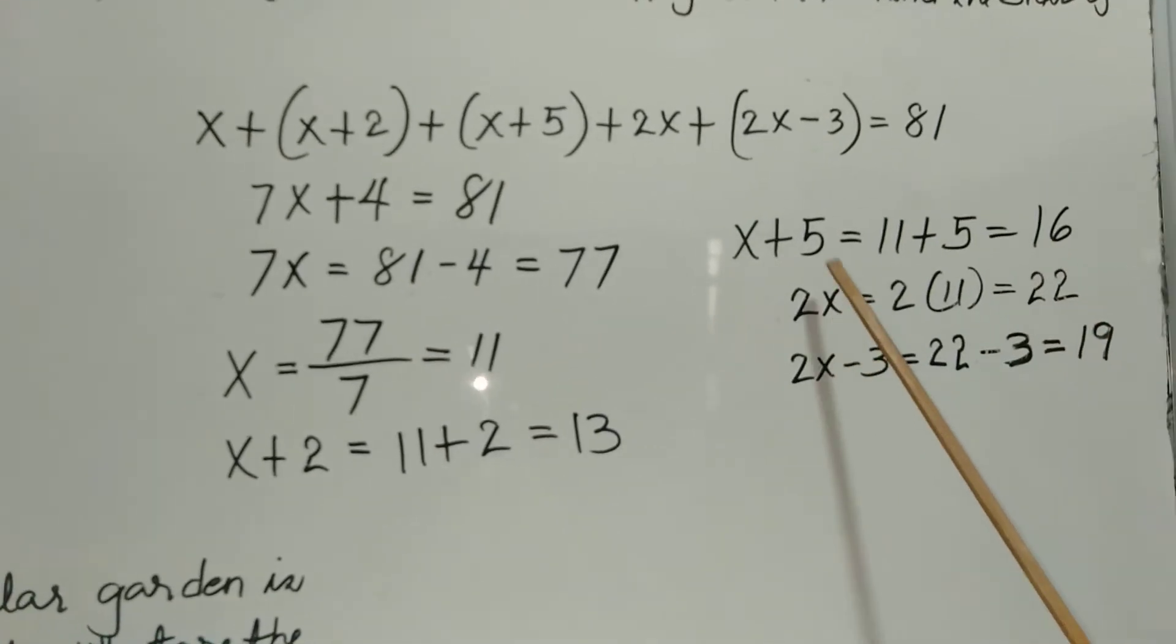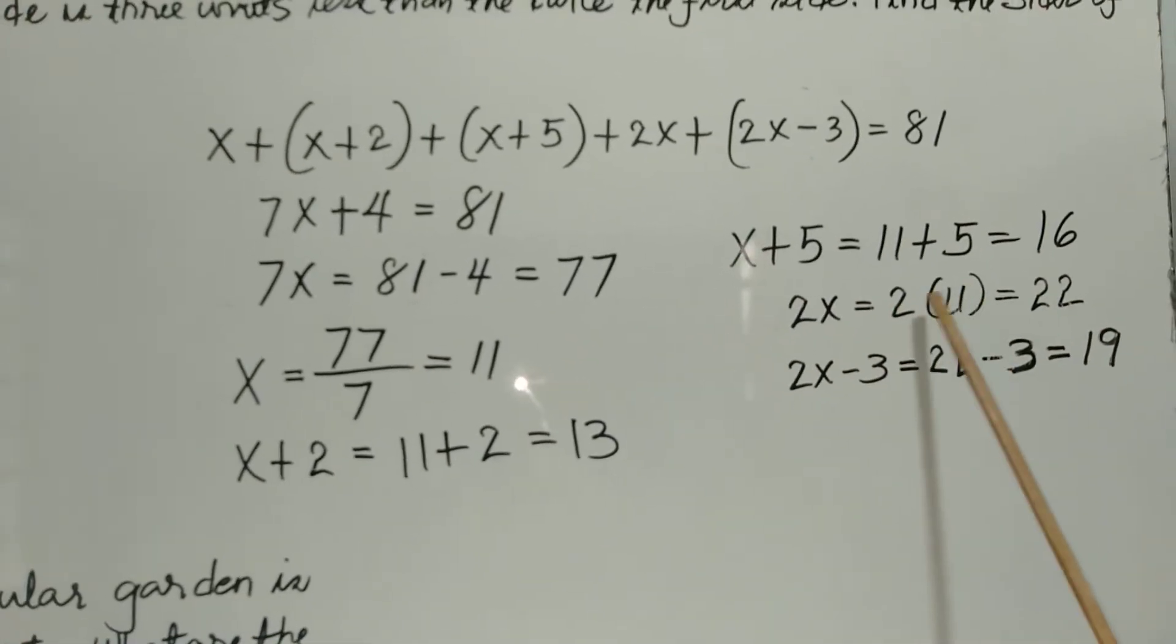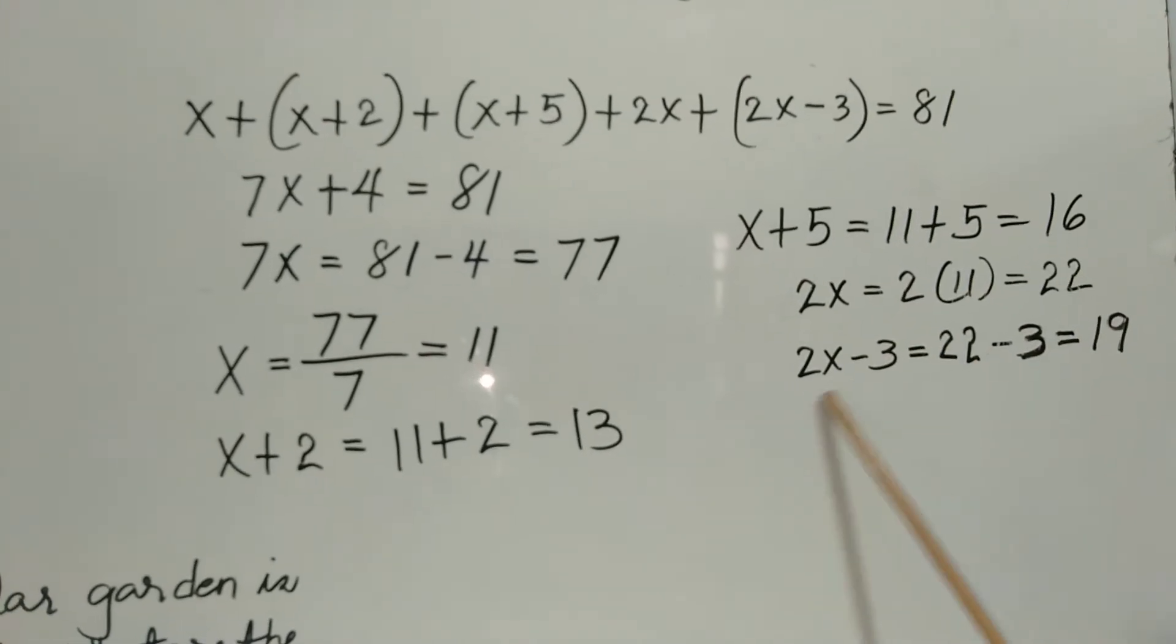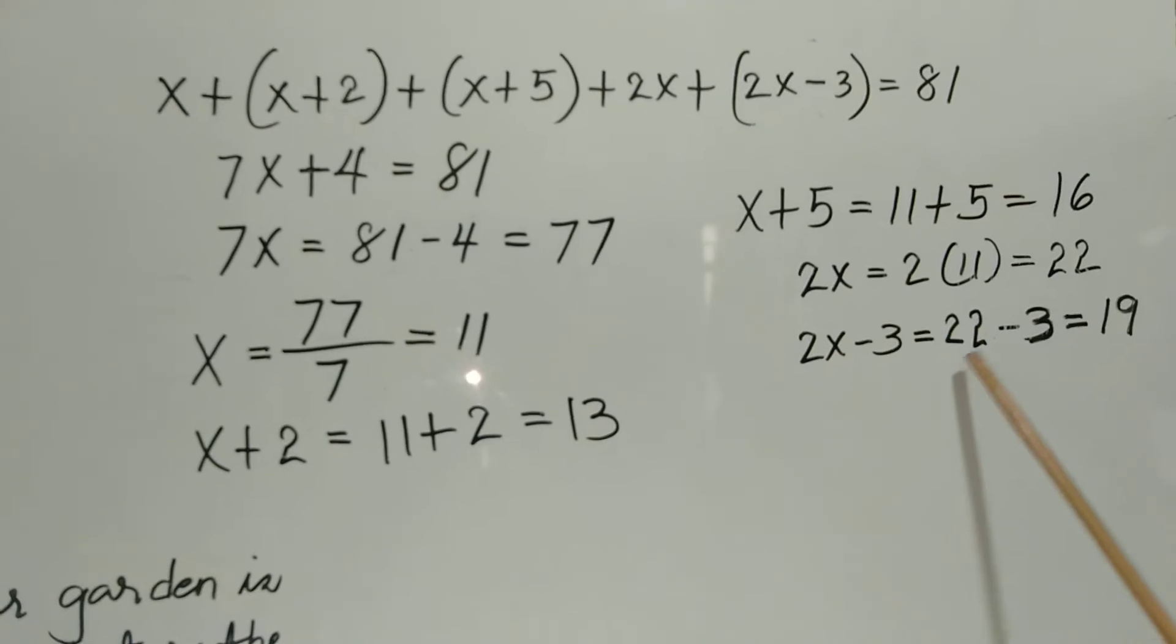The fourth side is twice the first side. So 11 times 2 is 22. And the fifth side is 3 units less than twice the first side. So 22 minus 3 is 19.